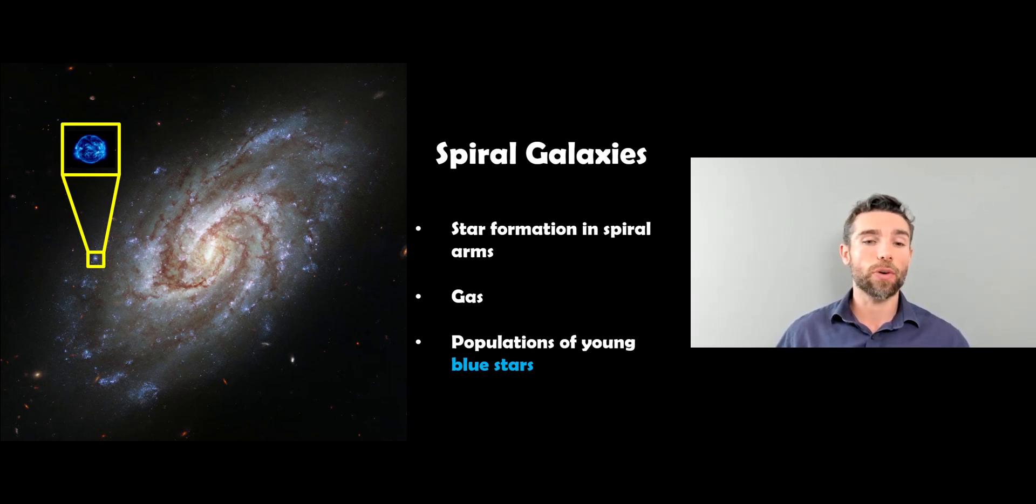And because they have star formation or have some varying rates of that, they will have a population of younger blue stars, whereas the elliptical galaxies don't have the gas to form new stars. So you generally find that they have an older, redder population of stars.